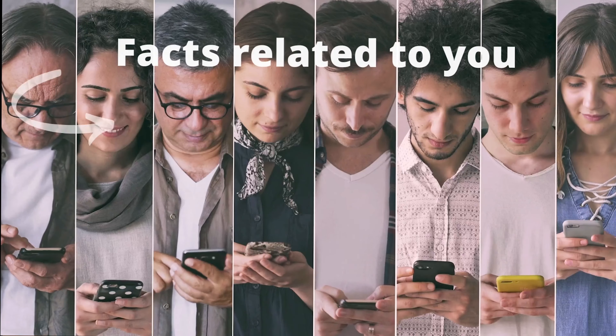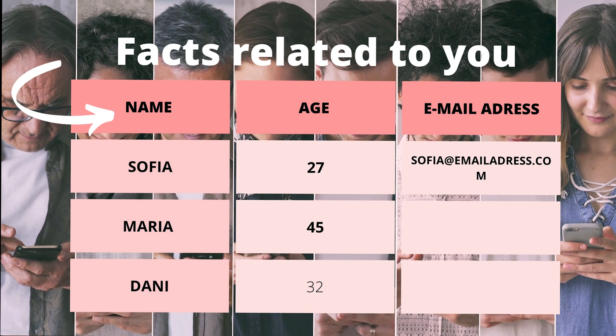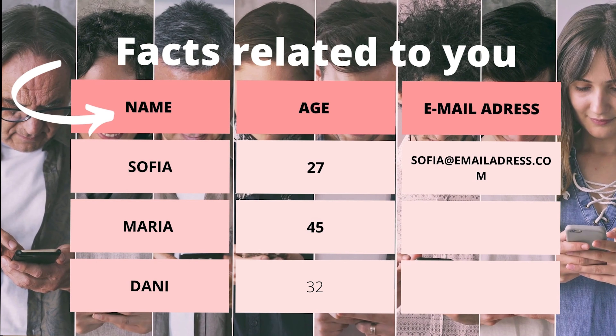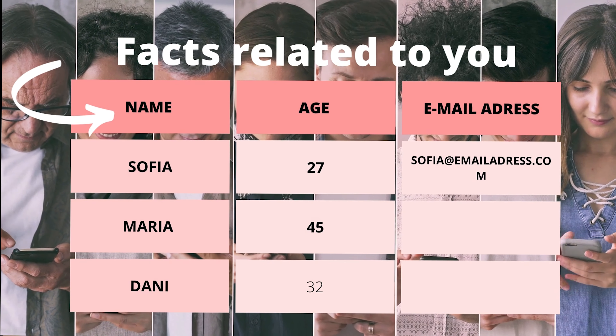Before we go into what a database is, it's important to understand the concept of data. Data is pieces of information related to an object — this could be age, weight, height, or name. It's all pieces of information related to you. A PDF, an image and a file are also considered pieces of data.